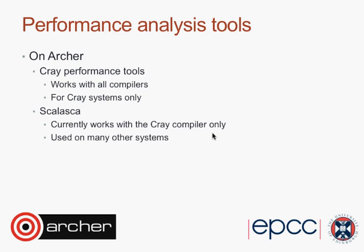On Archer there are two performance analysis tools available: the Cray performance tools and Scalasca. The Cray performance tools work for all compilers — Cray, Intel, and GNU — but they are specific to Cray systems, so if you've developed your code on another system you won't be able to use those there. Scalasca on Archer has been installed for the Cray compiler only, but the advantage for some users is that it's available on other systems and you may have experience with it. If you're using other systems for your scaling studies, there are also other performance analysis tools such as MAP or CAL.